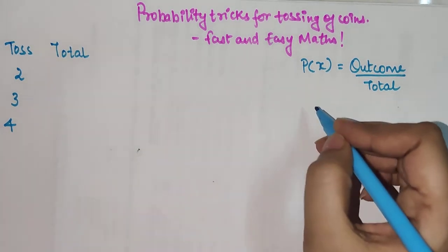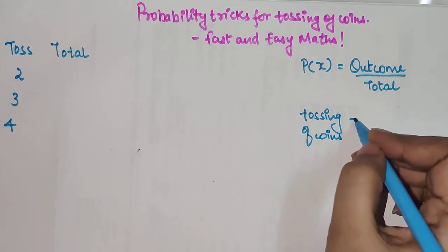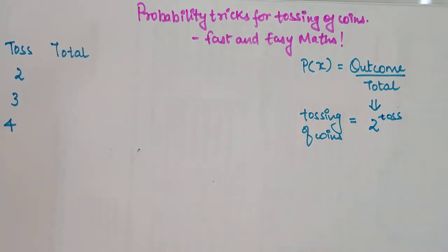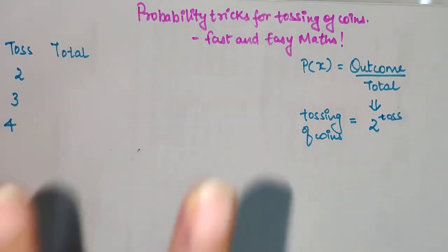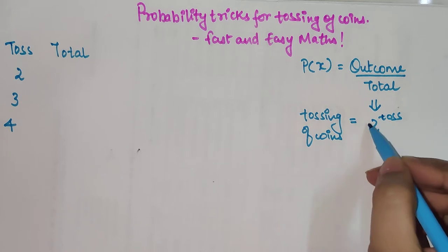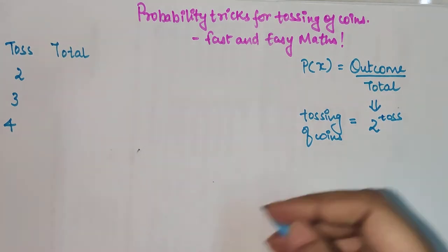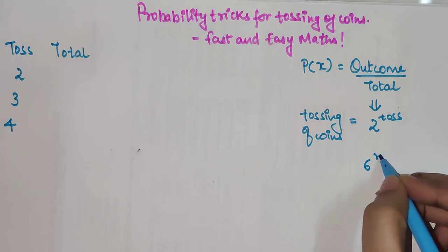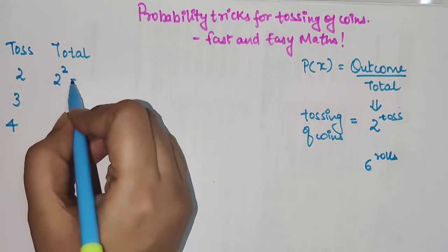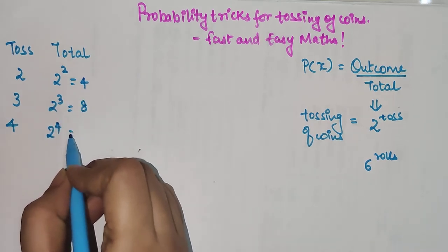In the case of tossing coins, the total is nothing but 2 raised to the number of tosses. Why 2? Because when you toss a coin there are only 2 possible outcomes: heads and tails. Similarly, if you were rolling a dice it would be 6 raised to the number of rolls. So here we have 2 raised to 2 which is 4, 2 raised to 3 which is 8, and 2 raised to 4 which is 16.